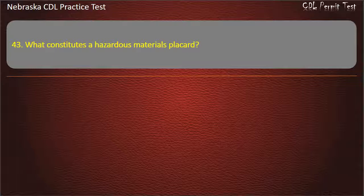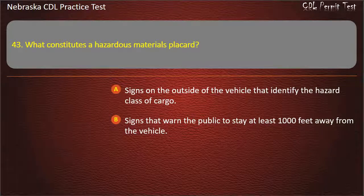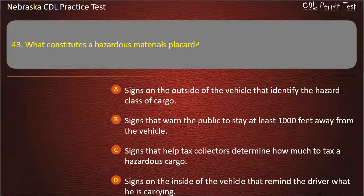Question 43. What constitutes a hazardous materials placard? Signs on the outside of the vehicle that identify the hazard class of cargo; signs that warn the public to stay at least 1,000 feet away from the vehicle; signs that help tax collectors determine how much to tax a hazardous cargo; signs on the inside of the vehicle that remind the driver what he is carrying. Answer: Signs on the outside of the vehicle that identify the hazard class of cargo.